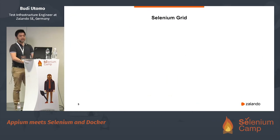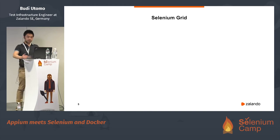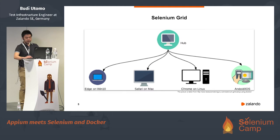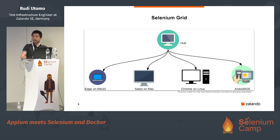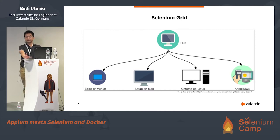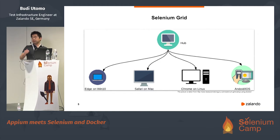So we start with Selenium Grid. I believe all of you know about Selenium Grid, but I just want to do a small explanation to refresh this topic because we will need it in the live demo. Selenium Grid is a grid that allows you to run tests in parallel on multiple machines. From the picture we can see that Selenium Grid consists of two parts: nodes are at the bottom, and the hub is at the top.